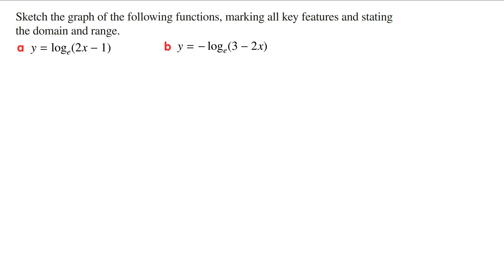Part b: y equals minus log_e(3 minus 2x). Looking at this rule, the sign outside the log function is negative and the coefficient of the x term inside the brackets is also negative. So the basic shape of this log graph is going to be a reflected curve.